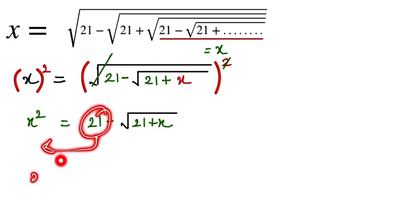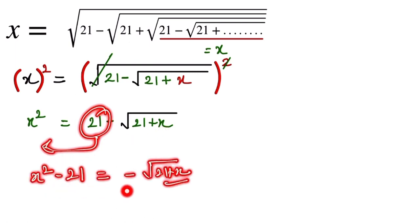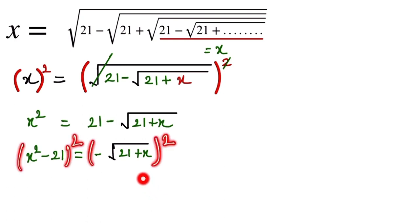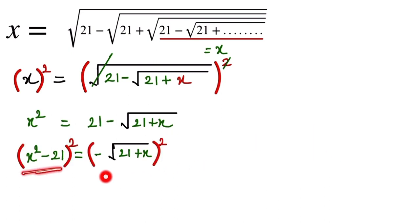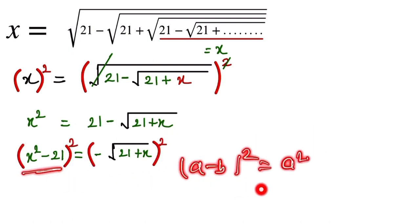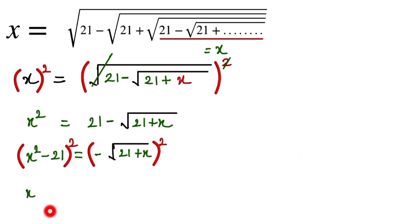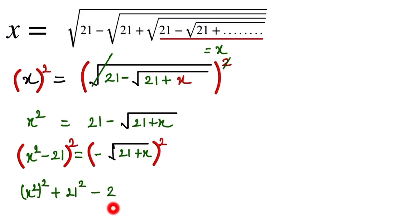So now we rearrange: x squared minus 21 equals negative square root of 21 plus x. Now we square both sides again. The left side expands using the (a minus b) whole square formula, giving us (x squared minus 21) whole square, which expands as x squared squared minus 21 squared minus 2 times 21 times x squared.